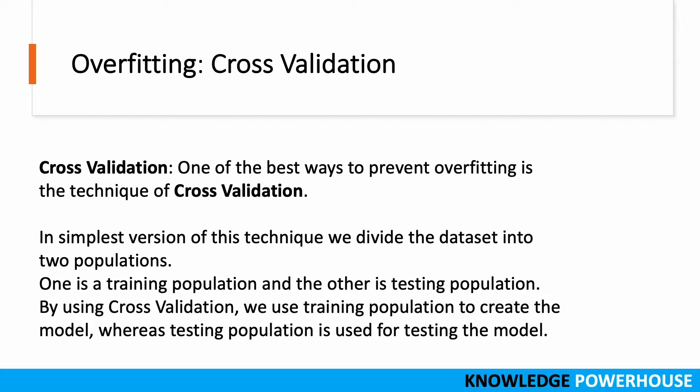Overfitting can be removed by various techniques. One of the best ways to prevent overfitting is the technique of cross-validation. In the simplest version, we divide the dataset into two populations — a training population and a testing population. We use the training population to create the model, whereas the testing population is used for testing the model, and we also have a validation population.